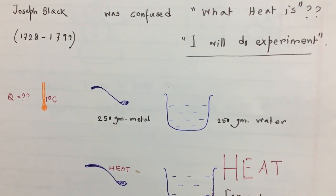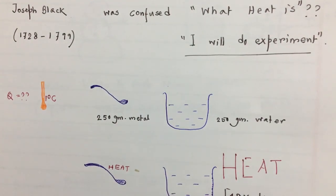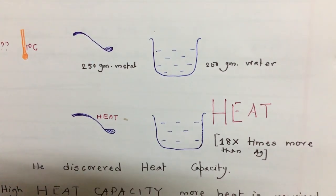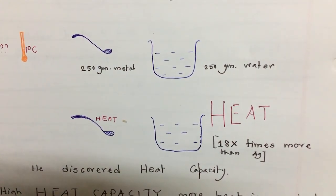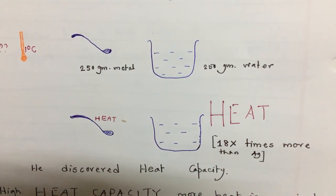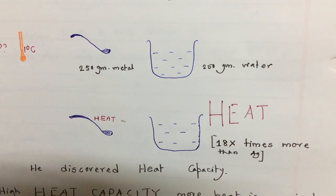He wanted to increase the temperature by one degree Celsius. Now what he observed is that heat required to increase the temperature one degree centigrade of the silver spoon is quite lesser than the heat required to increase the temperature of one degree Celsius of the same amount of water.